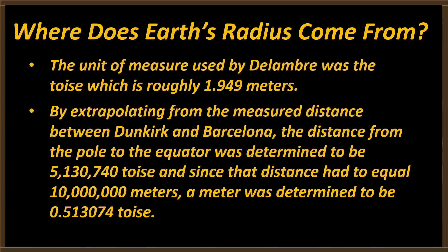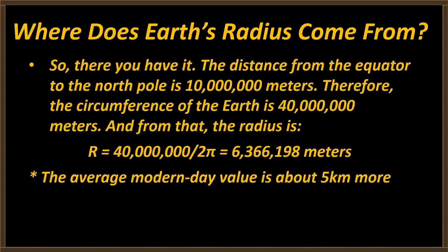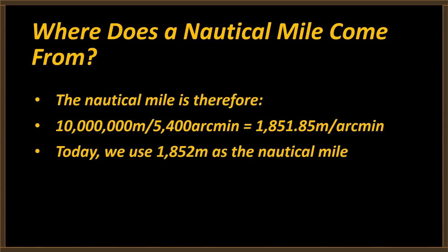The angular separation between Barcelona and Dunkirk is a percentage of 10 million meters from the equator to the pole. The unit used by de Lembray was the toise, roughly two meters. By extrapolating from the measured distance, the distance from the pole to the equator was determined to be 5,130,740 toises. Since that distance had to equal 10 million meters, a meter was determined to be 0.513074 toises. So: the distance from the equator to the North Pole is 10 million meters, the circumference of the Earth is 40 million meters, and the radius r is simply 40 million divided by 2 pi — or 6,366,198 meters. The average modern value is about 5 kilometers more, due to more accurate measurement. The nautical mile is 10 million meters divided by 5,400 arc minutes in a quarter meridian — equal to 1,851.85 meters, rounded today to 1,852 meters.